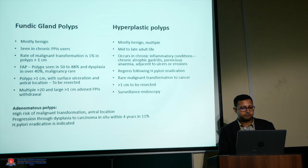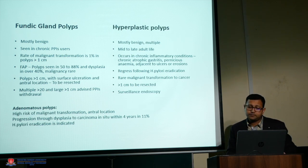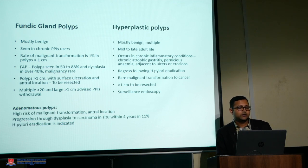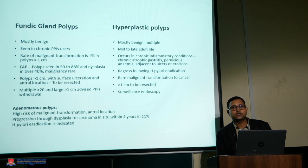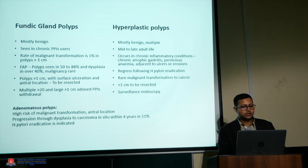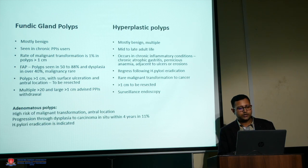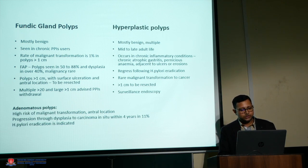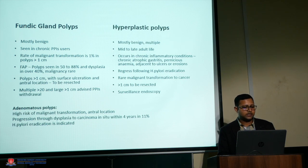Hyperplastic polyps are also benign. They are multiple and very common in elderly and adult patients with chronic inflammatory conditions like chronic atrophic gastritis, pernicious anemia, and gastric ulcers from reflux. Wherever there is healing and compensation in the stomach lining, these hyperplastic polyps can develop. Whenever found, they need to be resected, surveillance endoscopy is required, and H. pylori eradication is recommended.